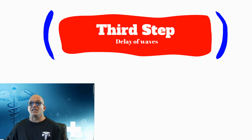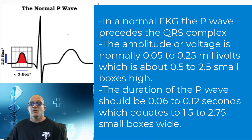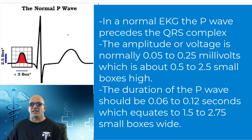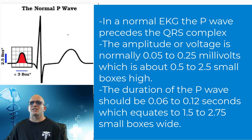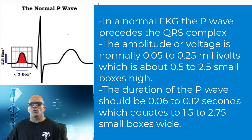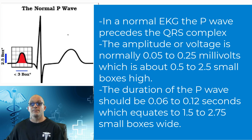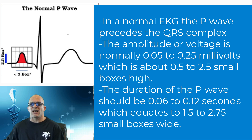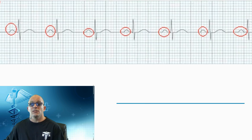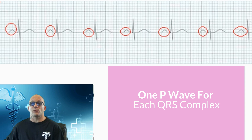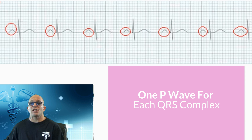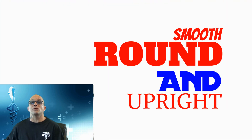The third step is to evaluate the waves and the delays between them. Starting with the P wave on a normal EKG, the P wave precedes the QRS complex and the amplitude or voltage is normally 0.05 to 0.25 millivolts, which equals about 0.5 to 2.5 small boxes in height. The duration of the P wave should be 0.06 to 0.12 seconds, which equals about 1.5 to 2.75 small boxes wide. We check for the presence of the P wave and its regularity — there should be one P wave for each QRS complex and they should be smooth, round, and upright.